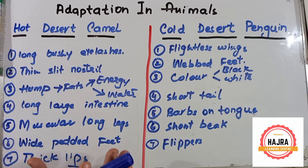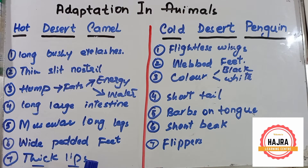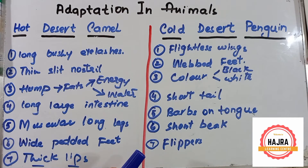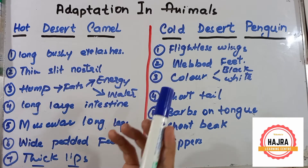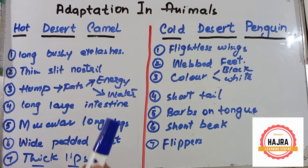Now let's talk about the cold desert animal: the penguin. The penguin is a flightless bird living in Antarctica, Australia, or the southern hemisphere. Let's talk about their adaptations one by one.